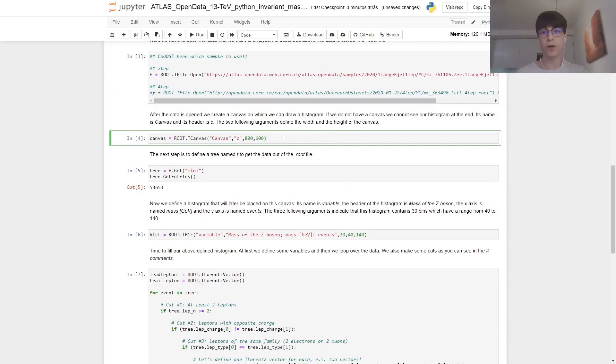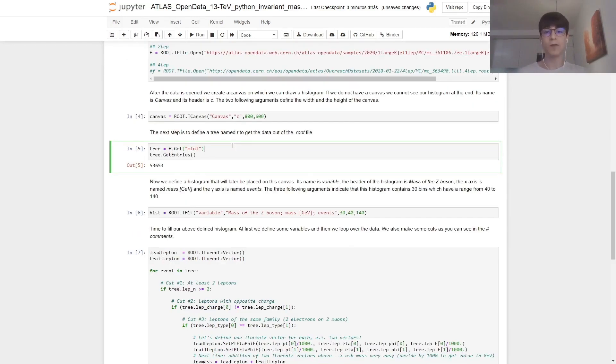We then need to declare a canvas to plot all of our histograms. So we state a variable canvas, and then inside the library, we get TCanvas, and then we declare the identity, the name, and the dimensions in length and height in pixels. Inside the ROOT file, we need to get a specific tree. So we declare a variable tree equal to f; inside the file we're going to get the tree called 'mini'. To see how many entries we have, let's just do tree.GetEntries. And then we see that we have 53,653 entries in total inside the mini tree.